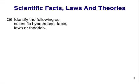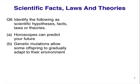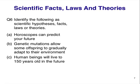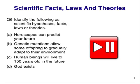One last set to consider. Think about these four statements and decide whether they are facts, hypotheses, laws, or theories. Horoscopes — whether you are a Capricorn or Taurus — can predict your future. Genetic mutations allow some offspring to gradually adapt to their environment. Human beings will live to 150 years old in the future. God exists. Pause the video at this point.